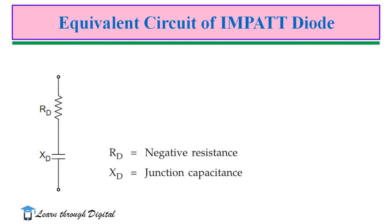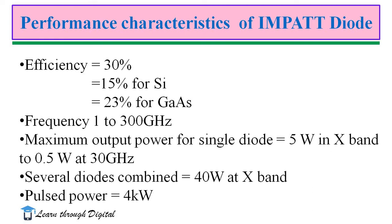Here are some performance characteristics of the IMPATT diode. Efficiency is generally around 30%, but in practice less than 30%. For silicon diodes, efficiency is 15%; for Gallium Arsenide, it is 23%. Frequency range is from 1 to 300 GHz. Maximum output power for a single diode is 5 W in X-band, down to 0.5 W at 30 GHz. With several diodes combined, output power can reach 40 W at X-band. Pulsed power is 4 kW.